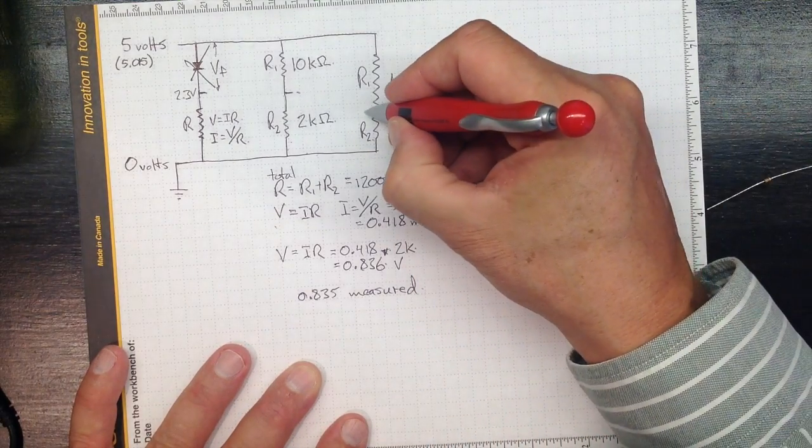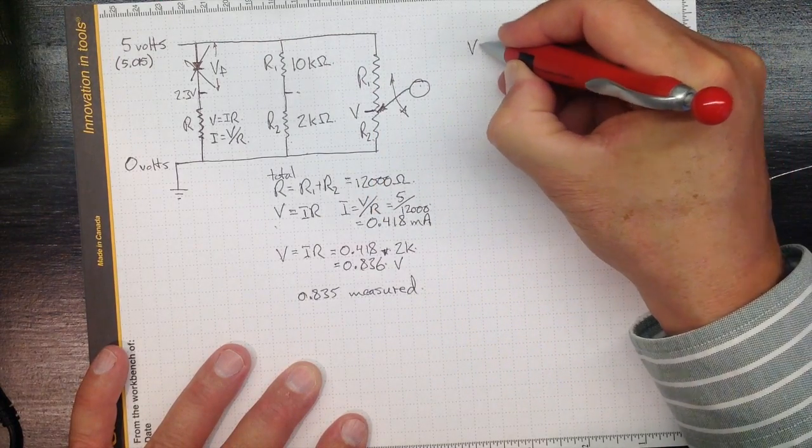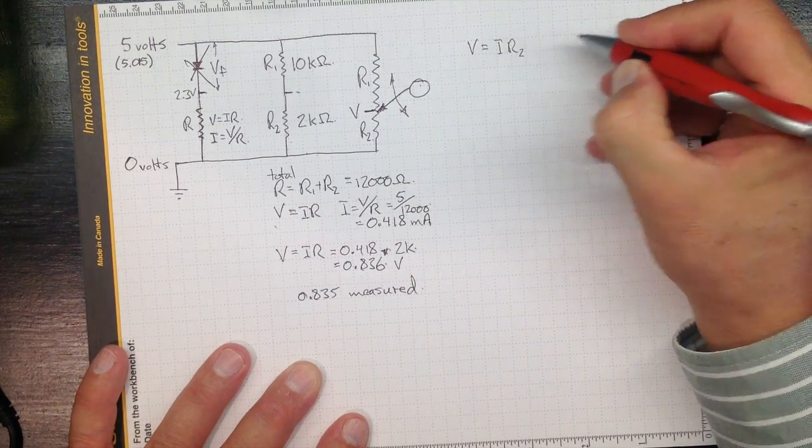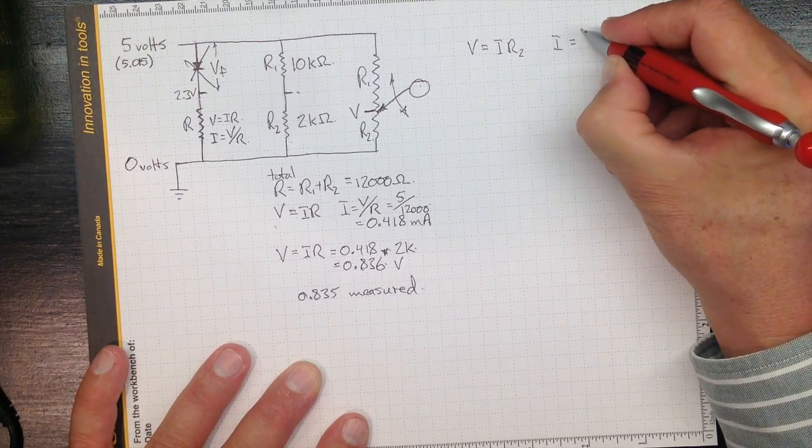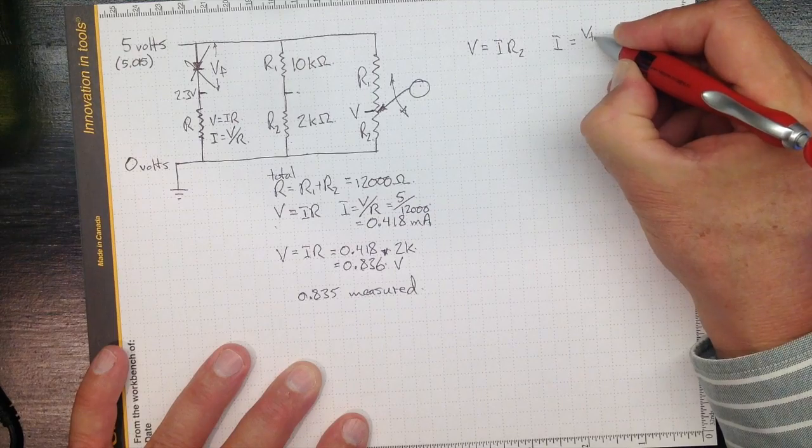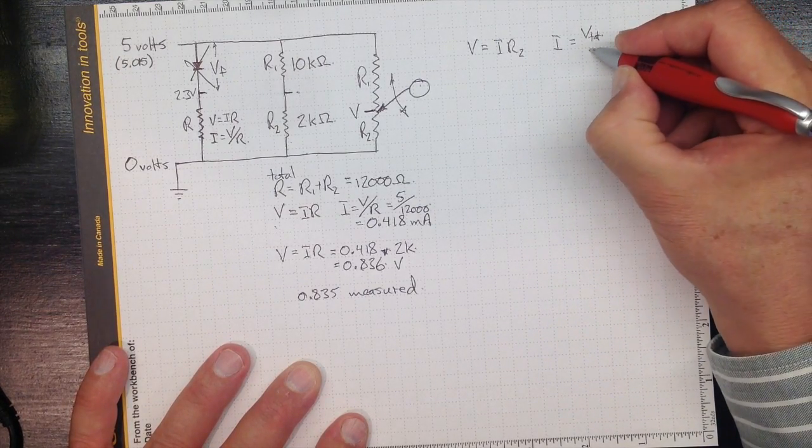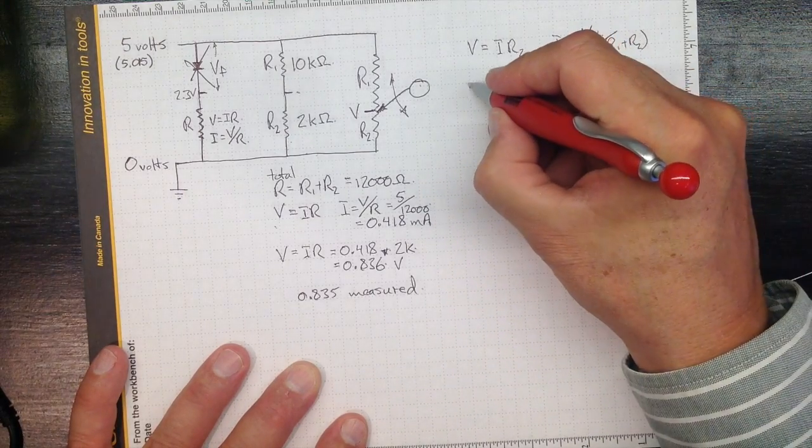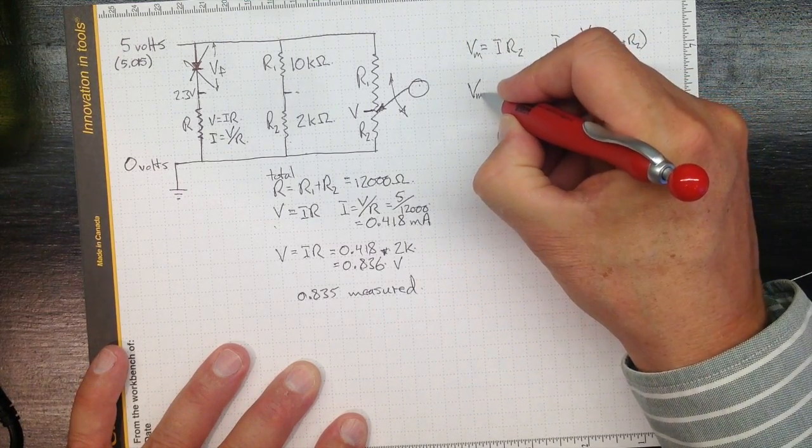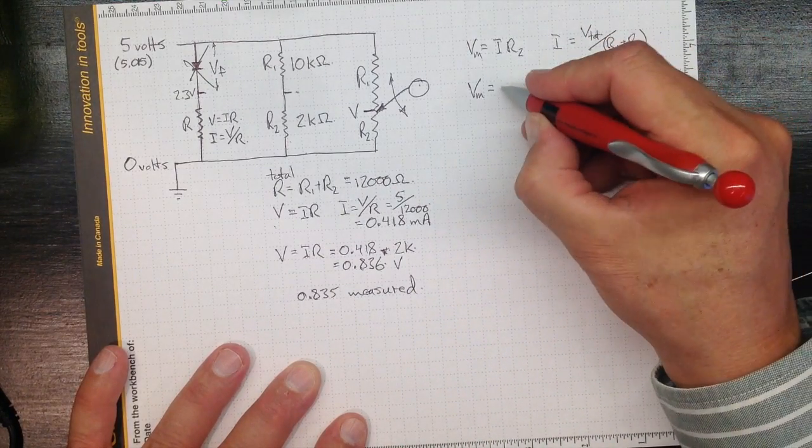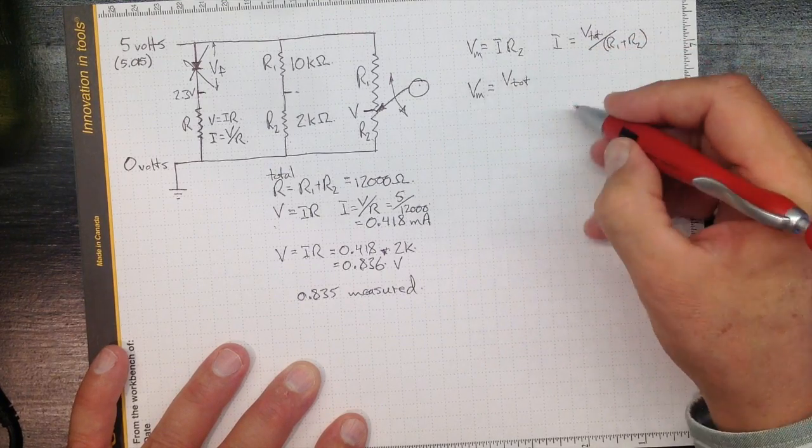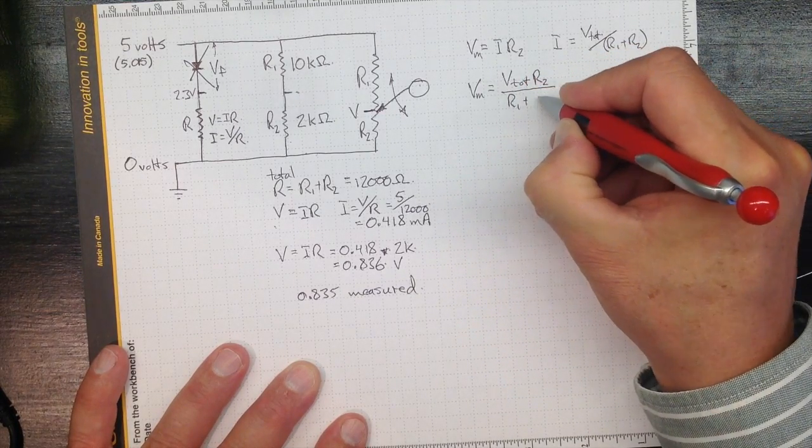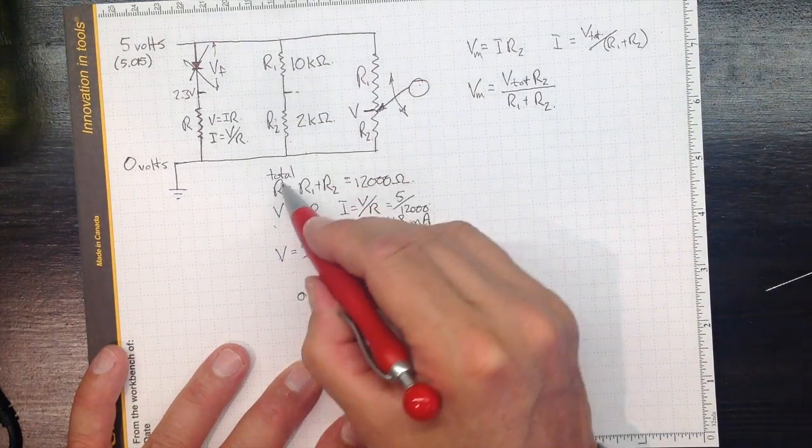So that voltage right there will be equal to I times R2, and I is equal to the total voltage, the 5 volts, divided by R1 plus R2. So the measured voltage should be the total voltage times R2 divided by R1 plus R2. Or you can just work through it step by step like we did over here.